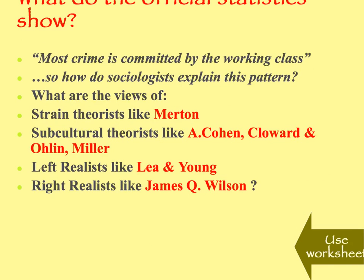So what do the official statistics show? Most crime is committed by the working class according to official statistics, so how do sociologists try to explain this pattern? You might want to consider what Merton said in his strain theory, how did he explain why working class people commit crime, as well as subcultural theorists like Albert Cohen, Cloward and Ohlin, and Miller.